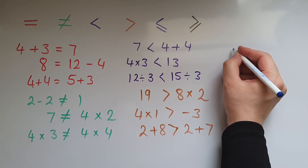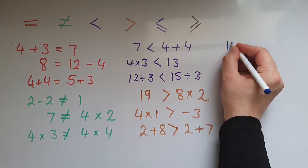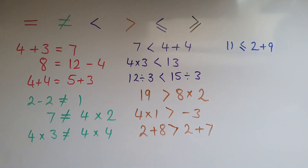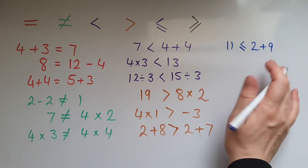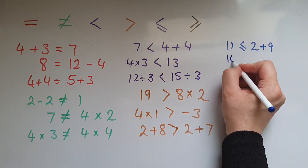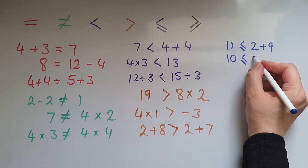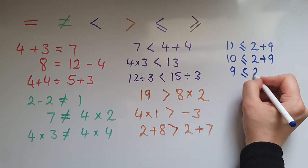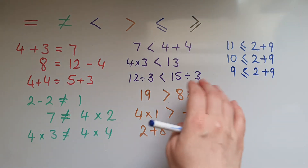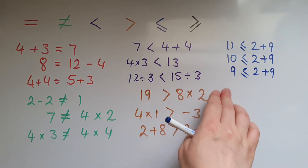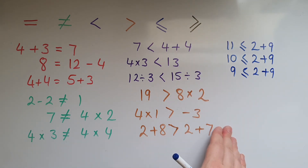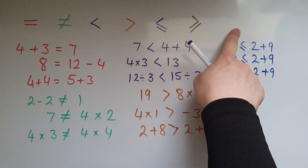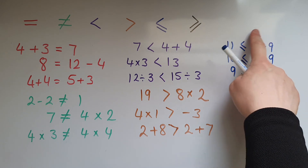Less than or equal to: 11 is less than or equal to 2 add 9. In this case they're both equal, but we could also have 10 is less than or equal to 2 add 9, or 9 is less than or equal to 2 add 9. So 11 and any number less than 11 can go on this side, but 12 cannot, because 12 would be greater than 2 add 9.